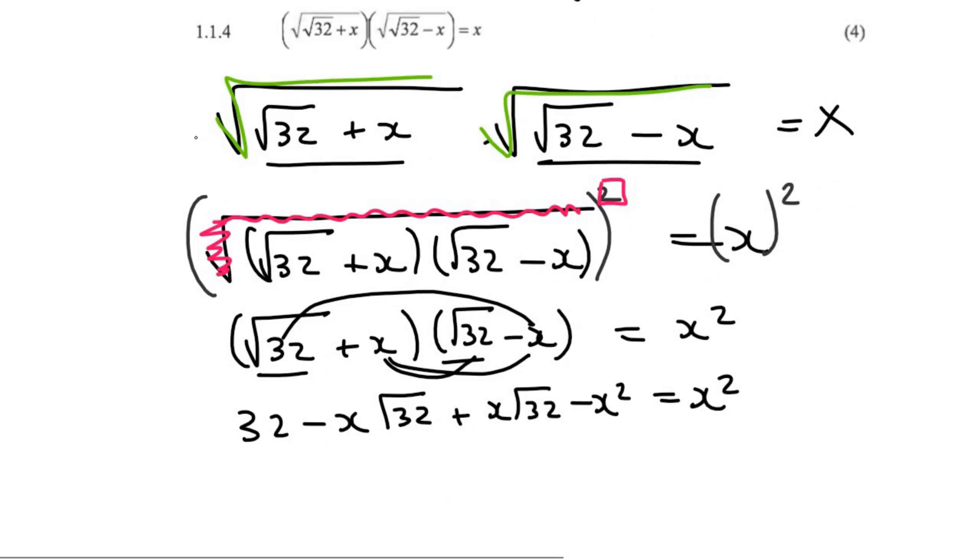What now happens, and this is awesome, it's going to make our life very easy, is that this part and this part cancel out, because one is a negative and one is a positive, so they can be crossed out. Then what I'm going to do is take this negative x squared over to the right-hand side, and that's going to give me 32 equals 2x to the power of 2.